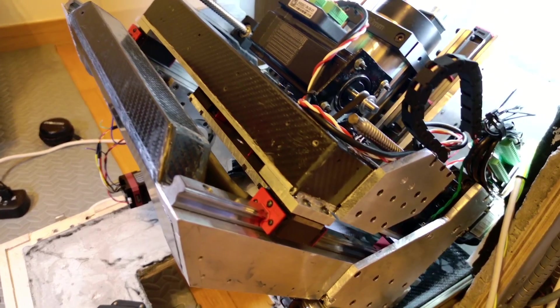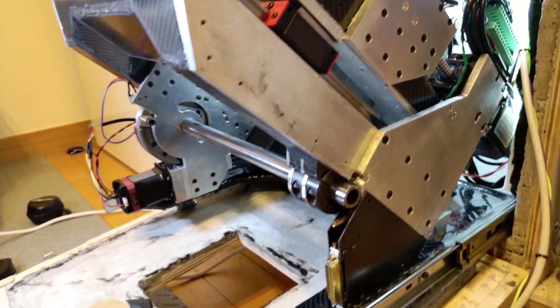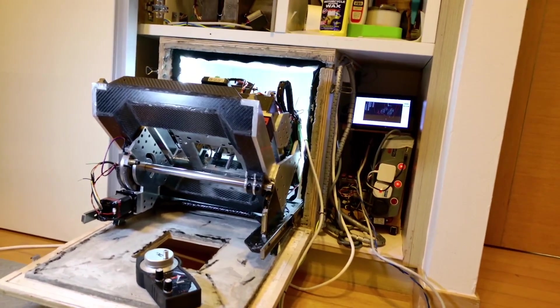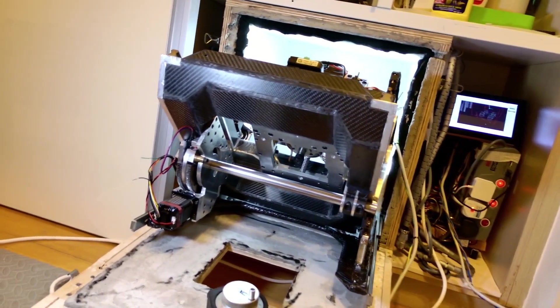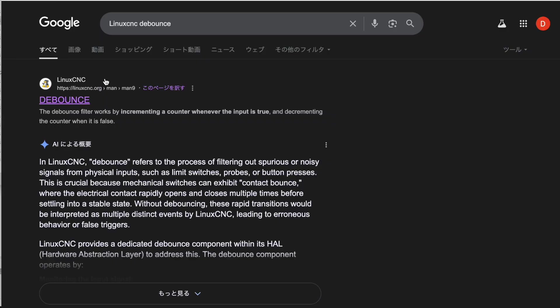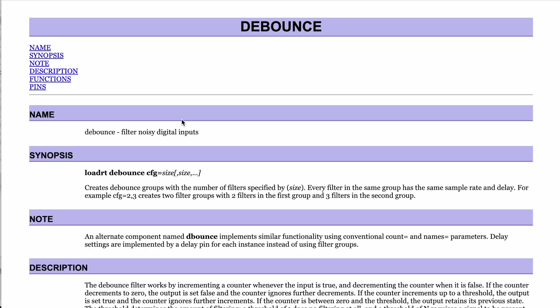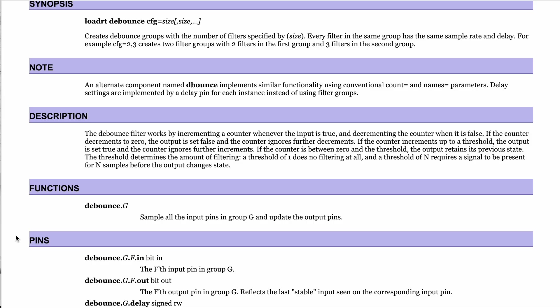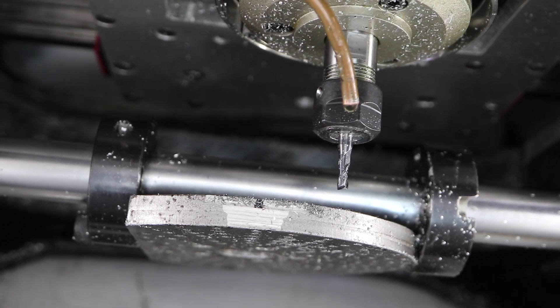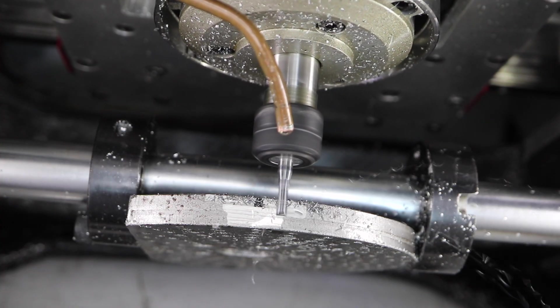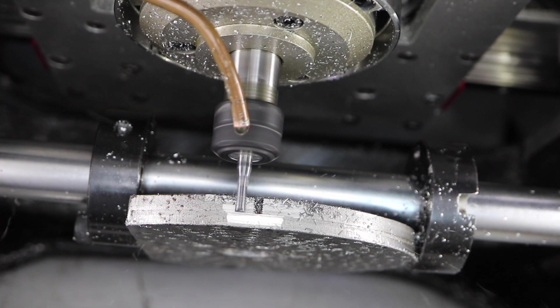Oh right, I almost forgot. There's one more important fix I added. Inside the LinuxCNC HAL file, I set up a debounce filter for the limit switches. That way, all those tiny spikes and glitches from noise get completely ignored. Now the switches only trigger when they're actually pressed. Pretty neat, huh? What Freak is talking about is the debounce component. It adds a tiny time delay, just a few milliseconds, so that quick bursts of electrical noise don't get mistaken for real signals. Combine that with proper grounding and ferrite cores, then your CNC machine becomes much more stable.